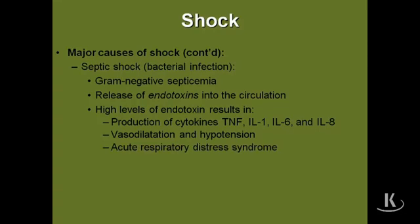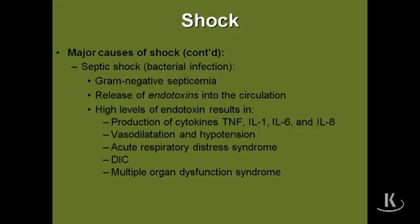Because the endotoxin damages endothelial cells throughout the intravascular space, it can also damage those in the capillary bed within the alveolar walls, leading to acute respiratory distress syndrome. Releasing tissue factor and exposing the underlying collagen in the basement membrane leads to DIC. Eventually, what happens is multisystem organ dysfunction or multisystem organ failure, leading ultimately to death.